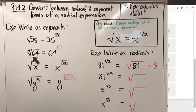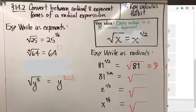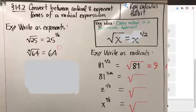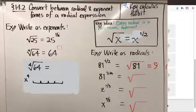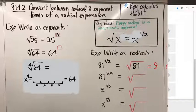Let's push that a step further by looking at a fourth root — 64 with a fourth root on top. How would I go about finding the fourth root of 64? We're looking for a number which, multiplied by itself with a total of four factors, is equal to 64. So what times itself times itself times itself equals 64?